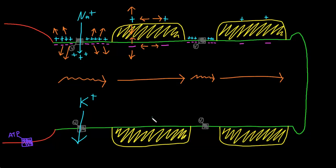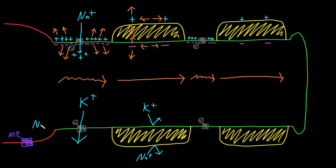Myelination also decreases the membrane permeability to ions, so that fewer ions in total cross the membrane during an action potential. Therefore, fewer ions in total need to recross the membrane after the action potential through the sodium-potassium pump that's going to be pumping back out all the sodium ions that came in through the voltage-gated sodium channels and pumping back in all the potassium ions that left during the action potential.